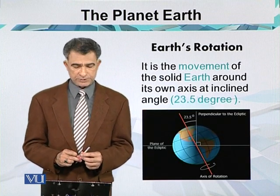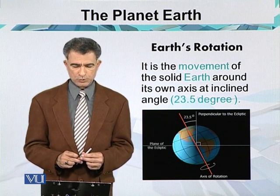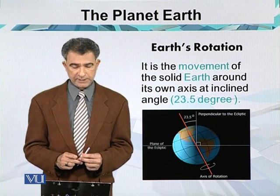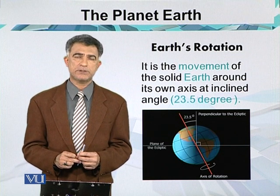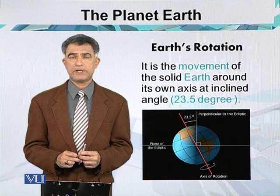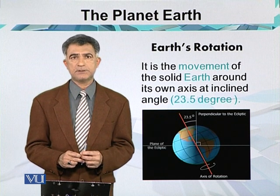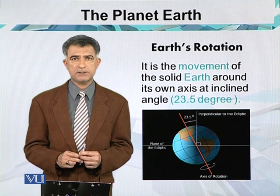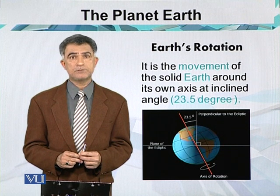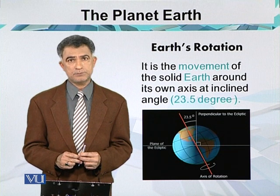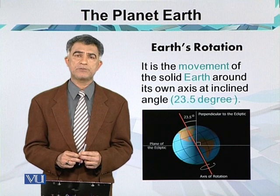Earth rotation is actually a movement of the solid Earth around its own axis at an inclined angle. This inclined angle, which we have already discussed, is 23 degrees and 50 minutes, or 23.5 degrees.